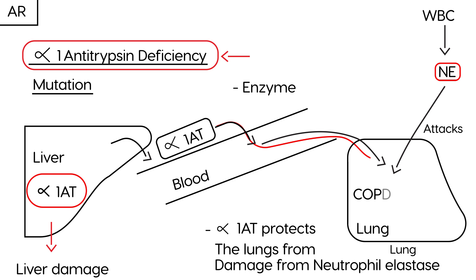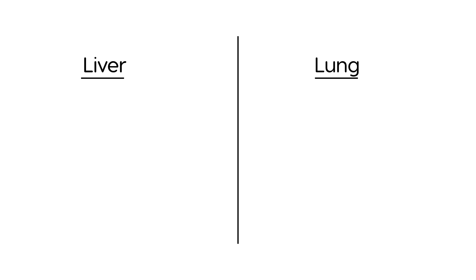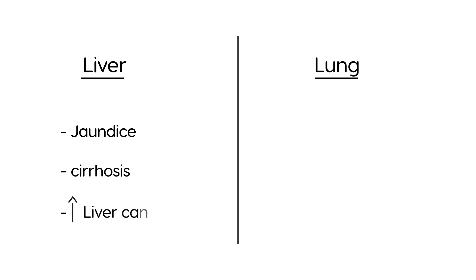As a result, neutrophil elastase is free to attack the lung, and you develop lung disease — COPD, emphysema, chronic bronchitis. The liver can develop jaundice, cirrhosis, and an increased risk of liver cancer. The tissue destruction in the lung leads to emphysema and COPD.